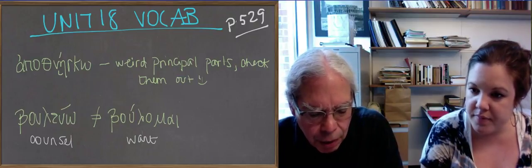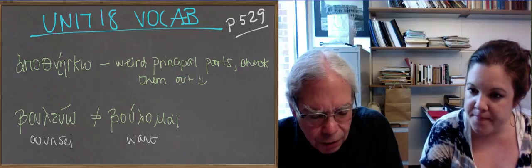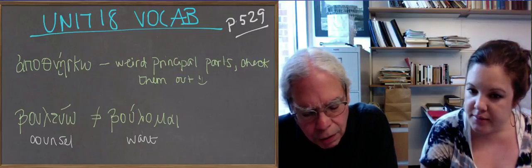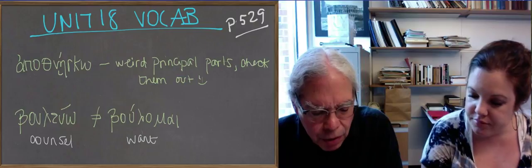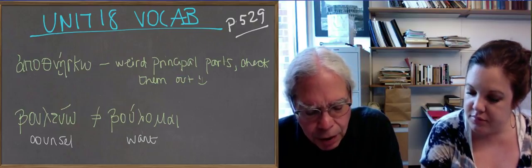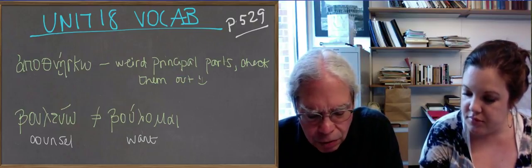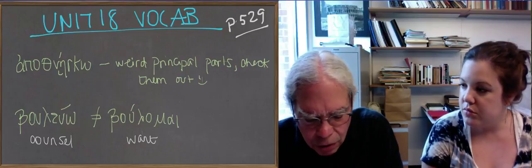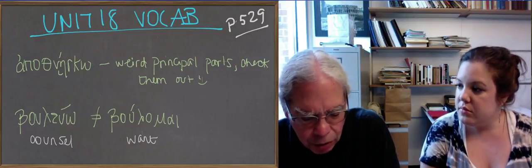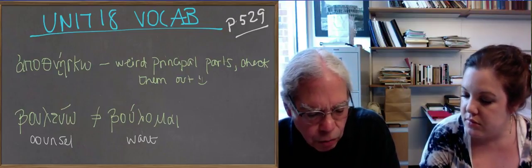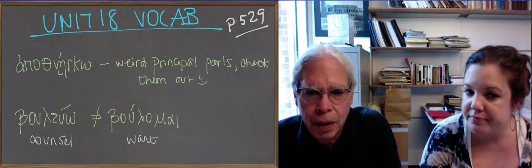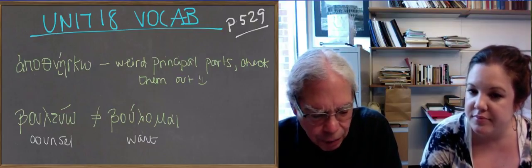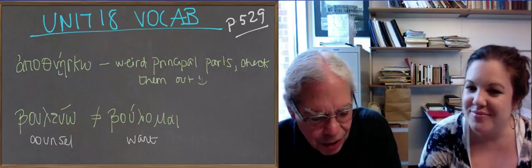So there it's an omicron verb like paideuo. There's nothing tricky about its principal parts. They've given you two compounds of buleuo: epibuleuo and sumbuleuo. Sumbuleuo is pretty common. It means to counsel, to advise somebody with somebody, or in the middle to take counsel or to consult with people. Greeks are big on consultative government. At least Athenians are.